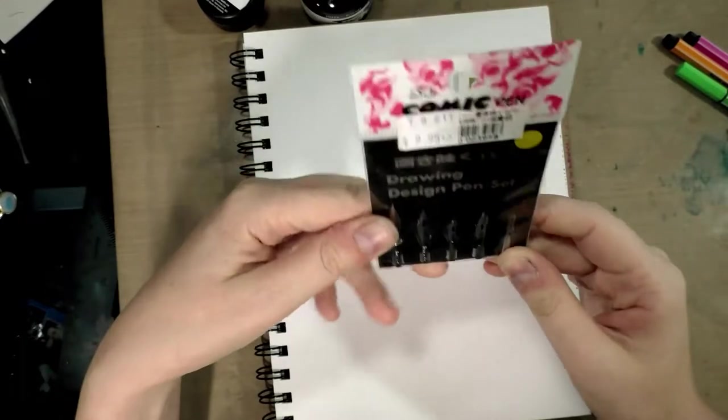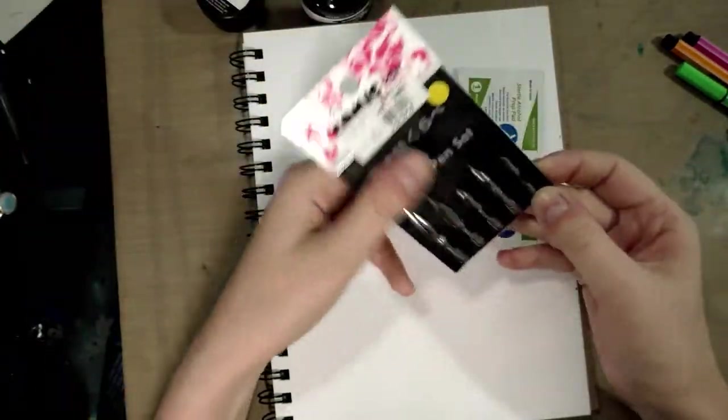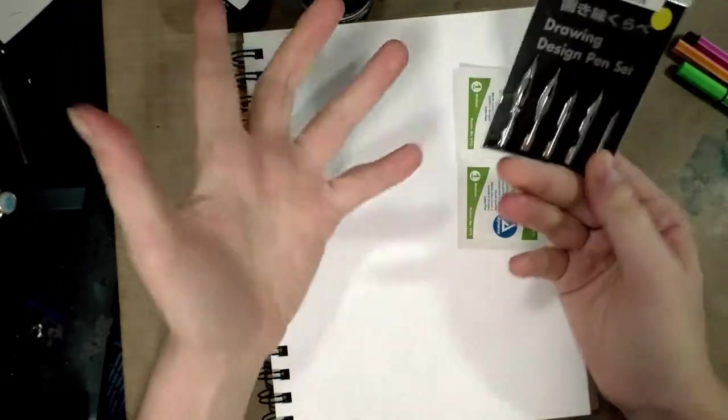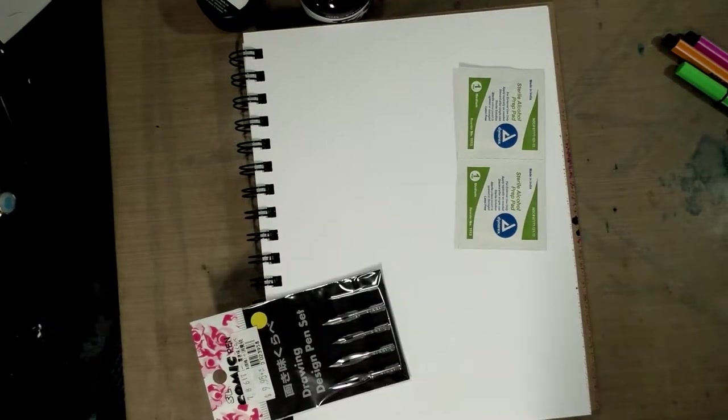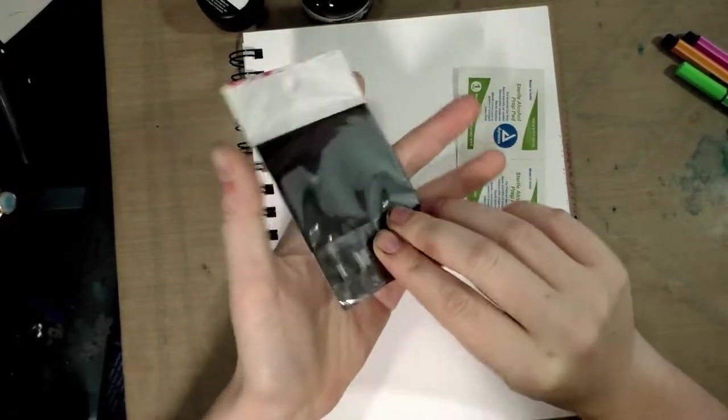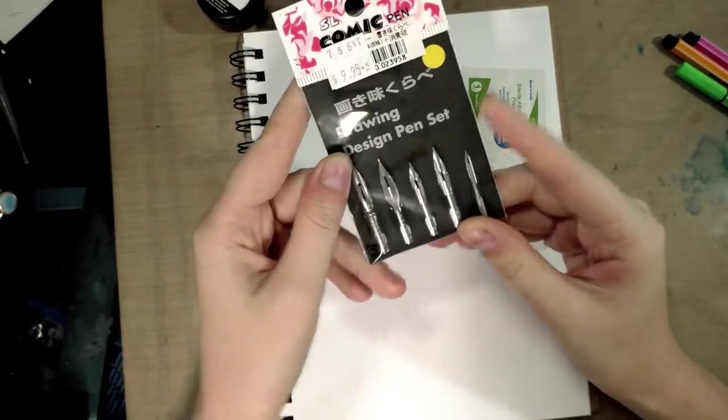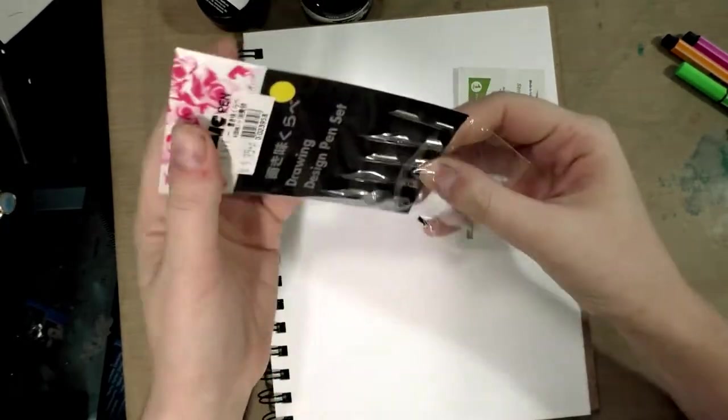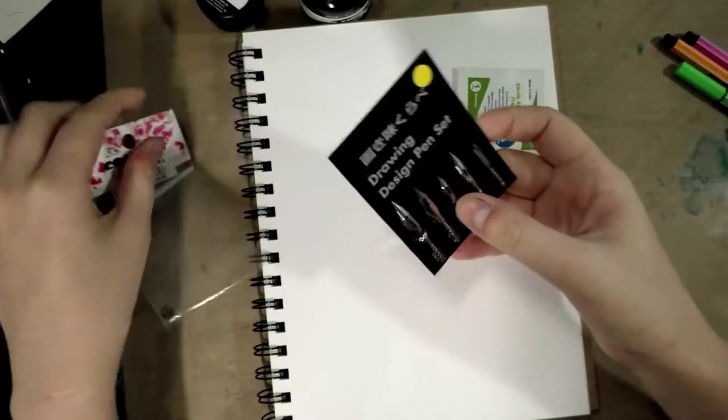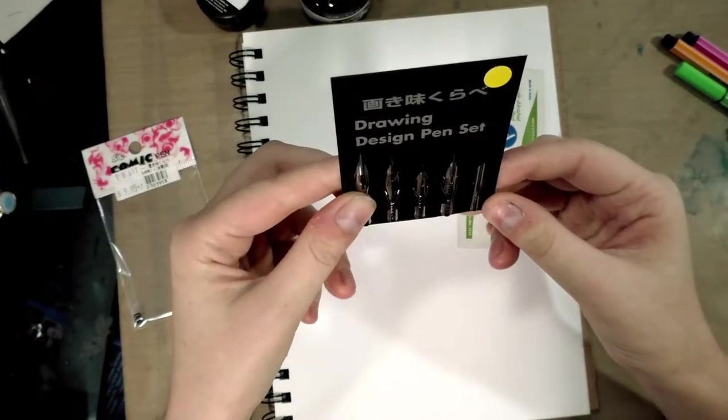These are actually Nico drawing nibs and it was ten bucks for five nibs, so about two dollars a nib plus tax. I had to go all the way to beautiful California to get these and they haven't even been opened yet. Let's go ahead and do that. I picked up the drawing pen set.